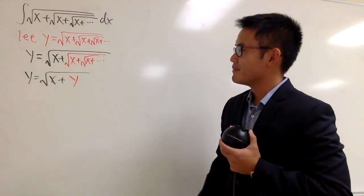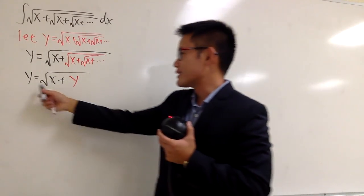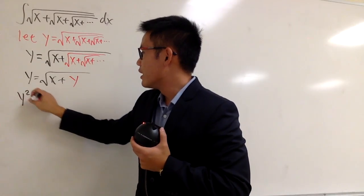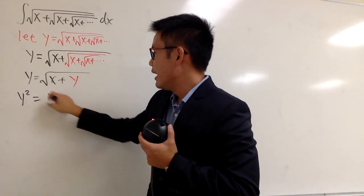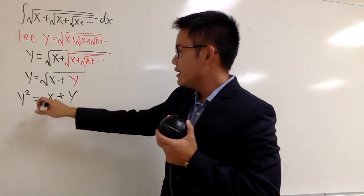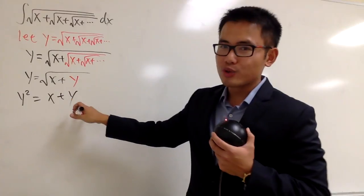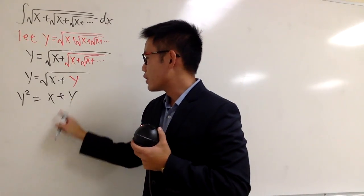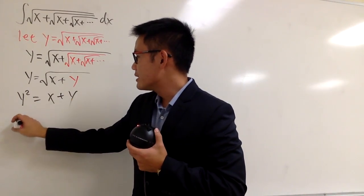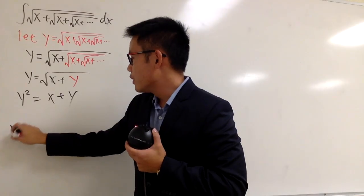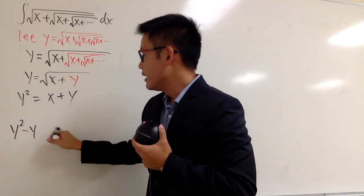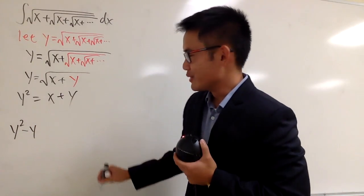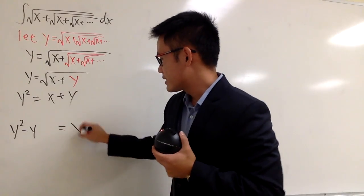Let's do that. To do so, let's square both sides. So we will have y squared equal x plus y. This is pretty much quadratic in y, so we can just subtract y on both sides. We get y squared minus y — and let me leave a space right here — equal to x.